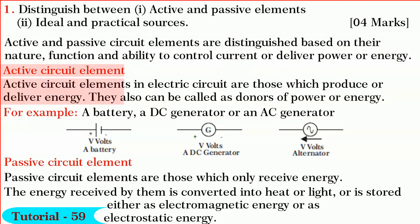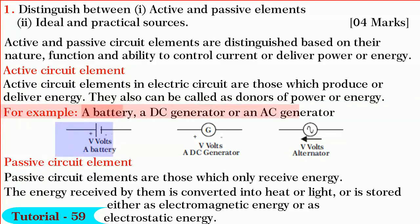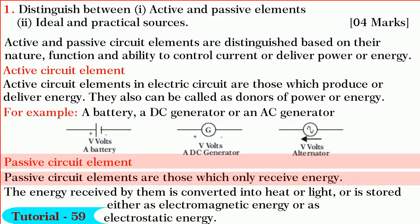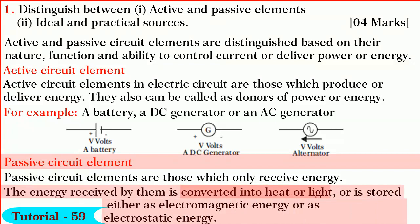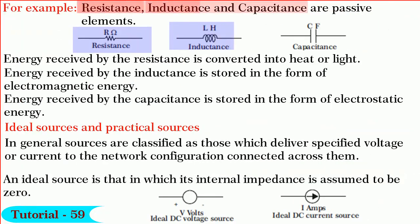Active circuit elements in electric circuits are those which produce or deliver energy. They can also be called donors of power. For example, a battery, a DC generator, or an AC generator. Whereas passive circuit elements are those which are capable of only receiving energy. The energy received by them is converted into heat or light, or stored either as electromagnetic energy or as electrostatic energy. For example, resistance, inductance, and capacitance.